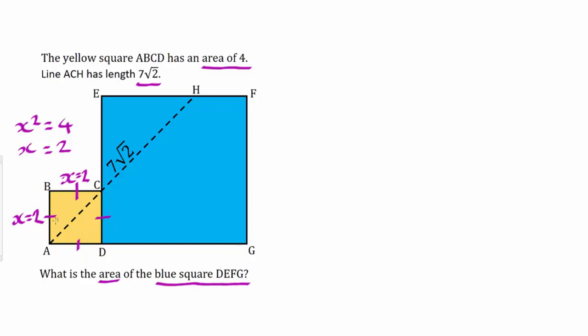What we have now is a right angle triangle ABC, and we can use Pythagoras to find length AC. That would be A squared add B squared equals the hypotenuse squared. So 2 squared add 2 squared equals AC squared. 4 add 4 equals AC squared, so AC squared equals 8.